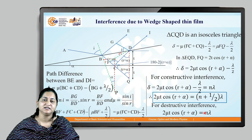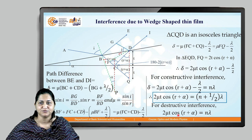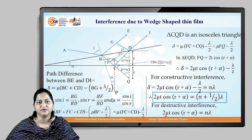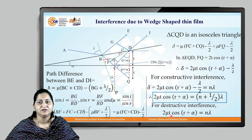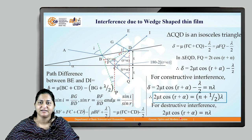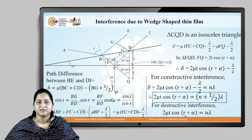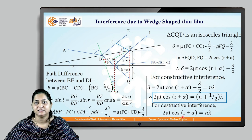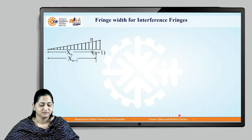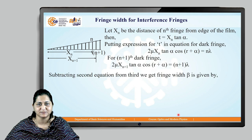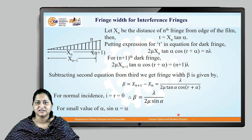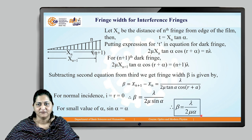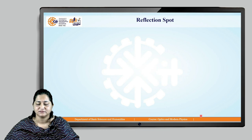Using this equation for wedge-shaped thin film interference, we can find: the refractive index of the thin film, the thickness of the thin film, the wavelength of the incident light, the wedge angle, and the angle of refraction. We can also find the fringe width, given by beta = lambda / (2·mu·alpha).